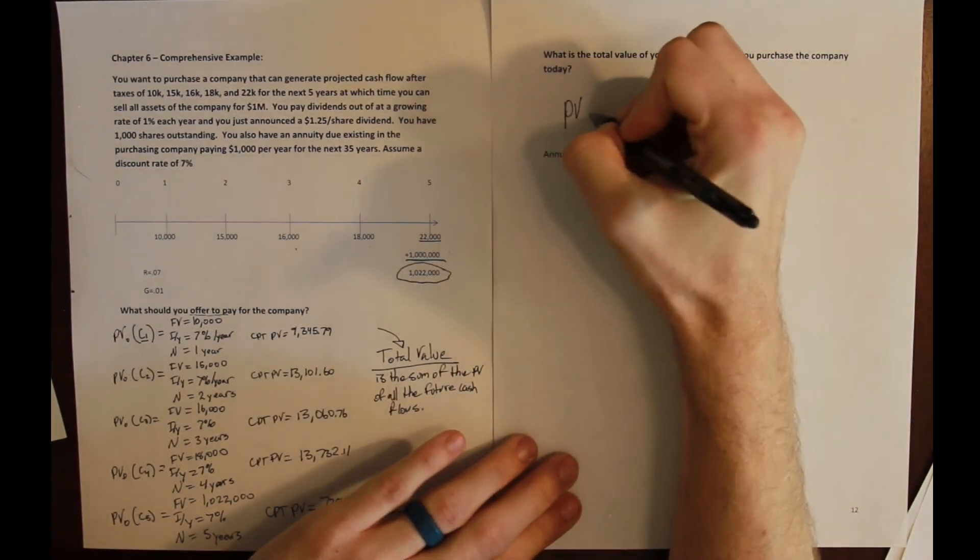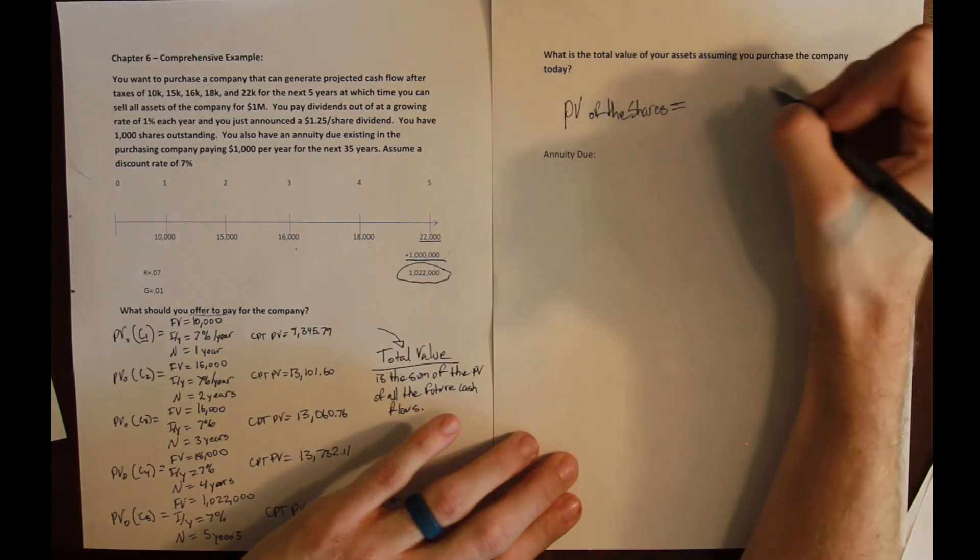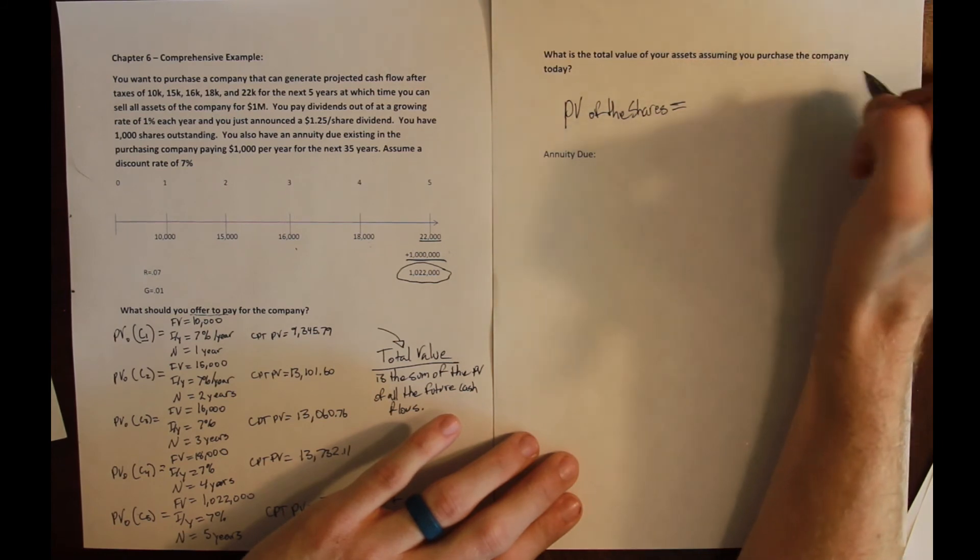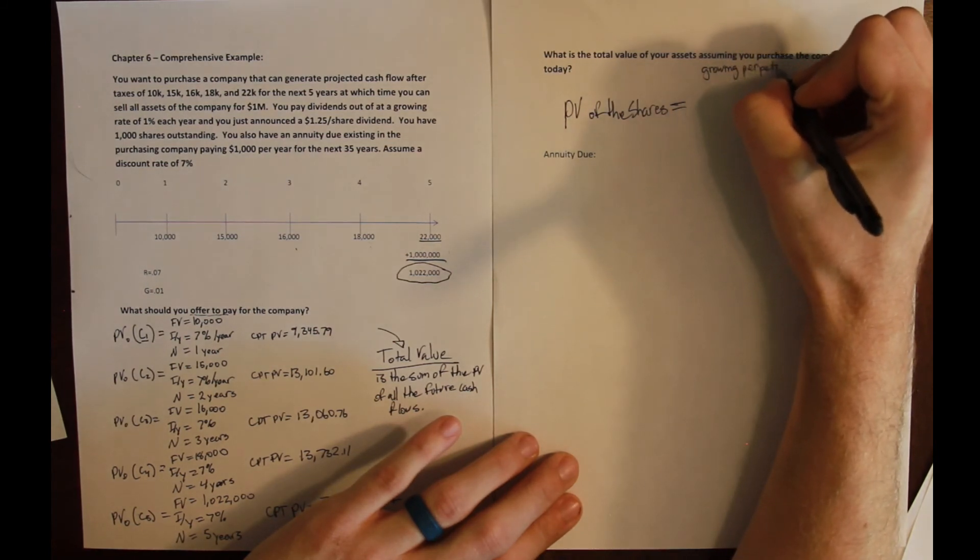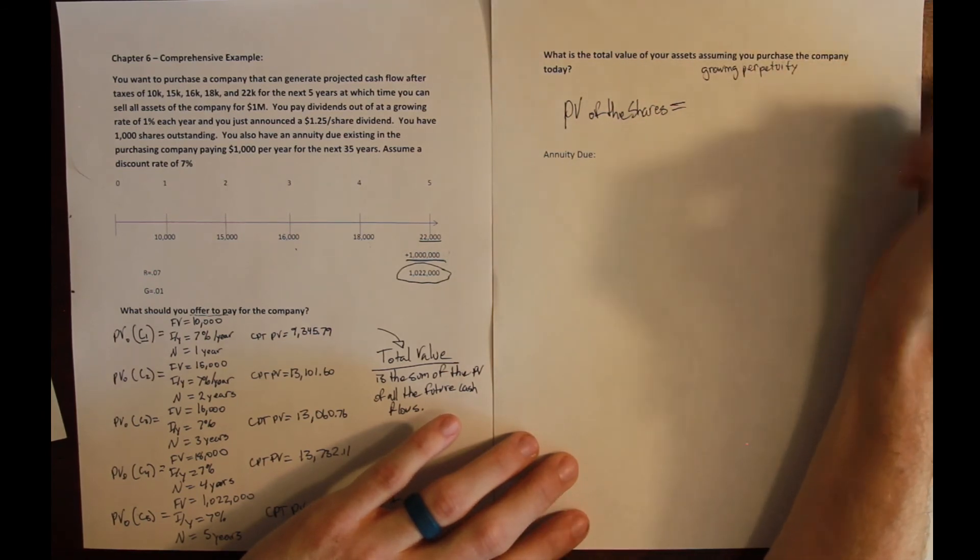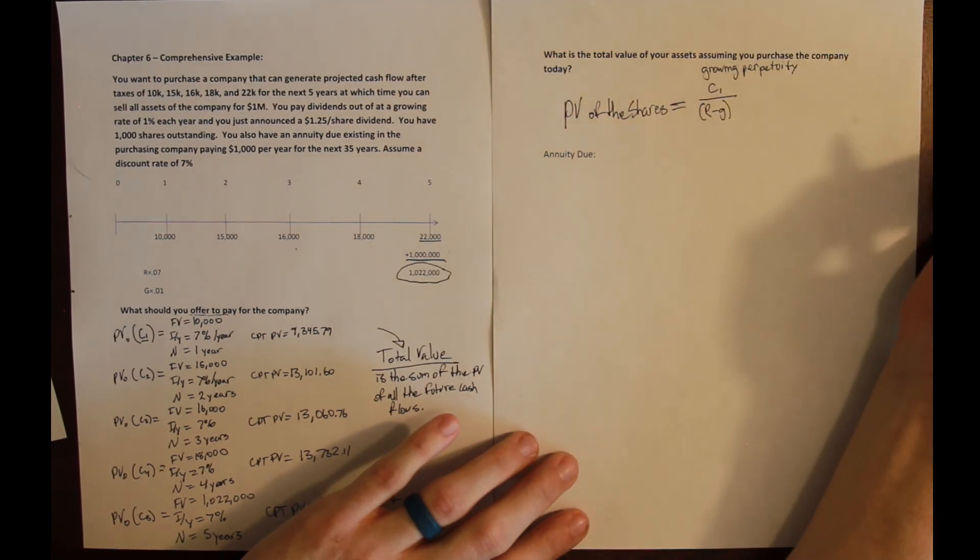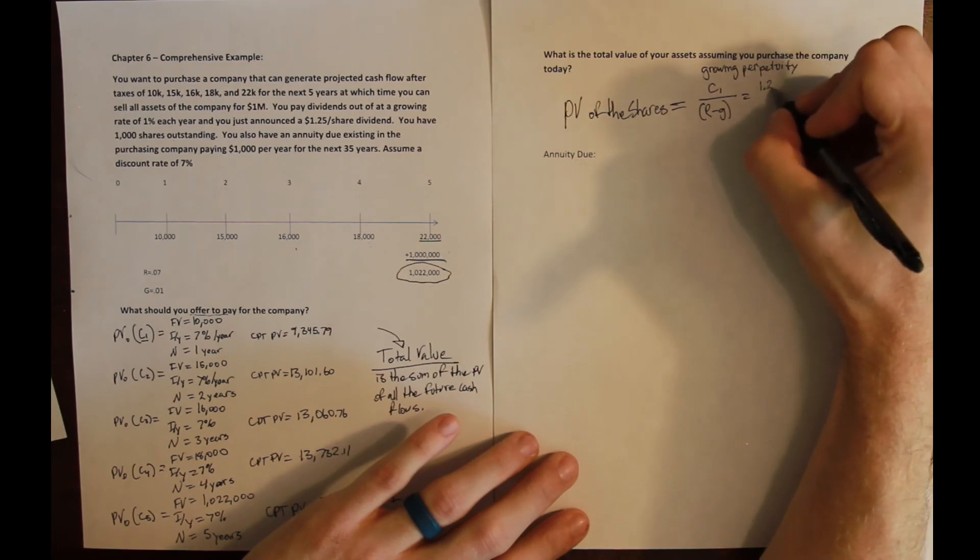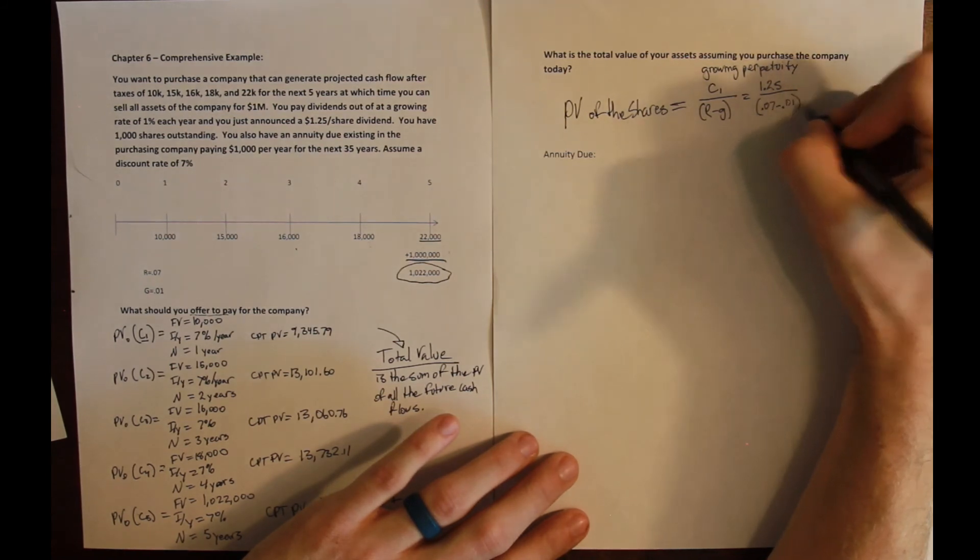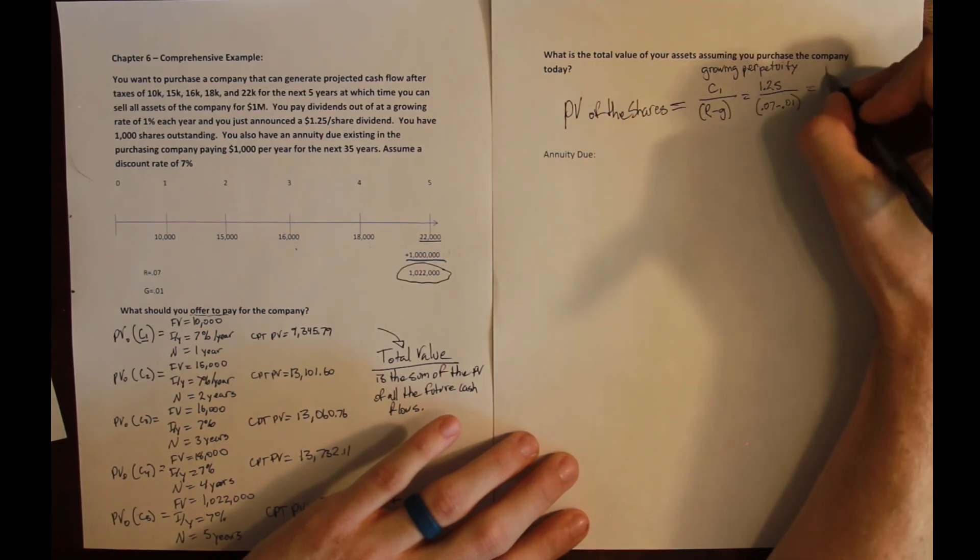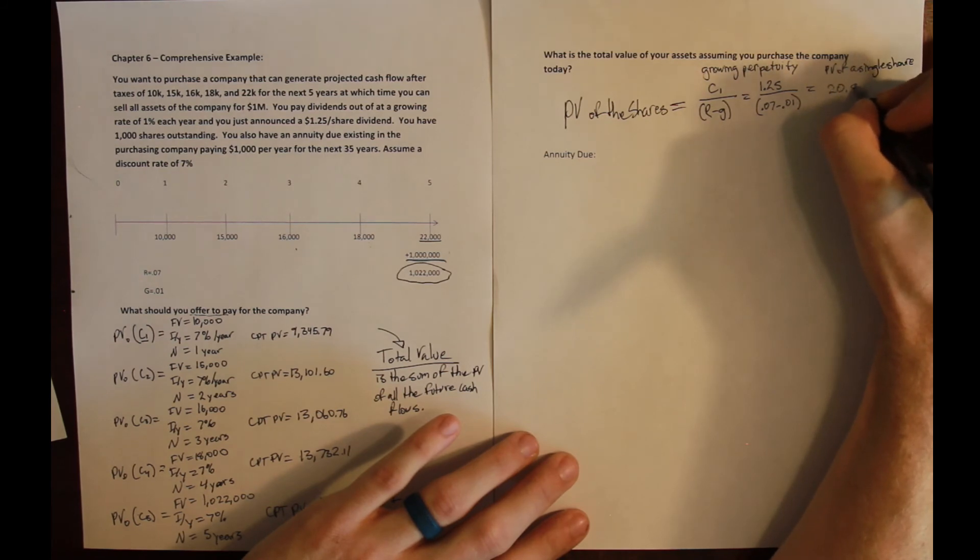So the first thing is, there's going to be a present value of the shares of the company. And shares are considered, we value shares, and we'll talk about this in the next lecture, so I won't go into a lot of detail here. But shares are paid out as a growing perpetuity. That is how we value shares, because we assume that they could potentially go on forever. And the formula for growing perpetuity is the cash flow, next period's cash flow, divided by the discount rate minus the growth rate. And all that is given, the cash flow of a share is the dividend paid, $1.25, divided by the discount rate, 0.07. And we're told that the dividend growth rate is promised to be 1%. So the present value of a single share is $20.83.